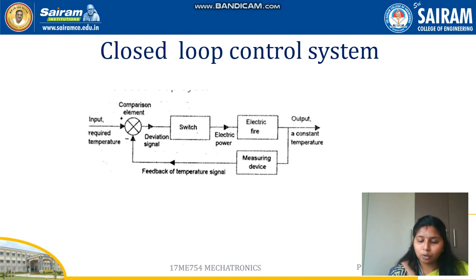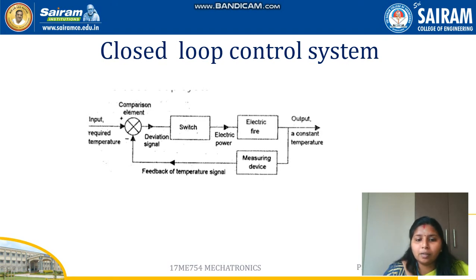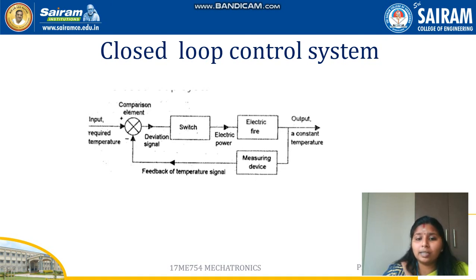Why do we need feedback? Just like in classes where we collect feedback every semester to know what is deviating in the process and what is going wrong — by feedback we come to know what things are happening. Once we get the feedback, we can rectify it. Likewise, here also there is a feedback device that monitors the entire process. If anything is going wrong, it informs the comparison element, which identifies the error and the process takes place again.